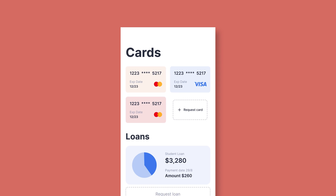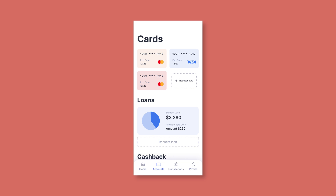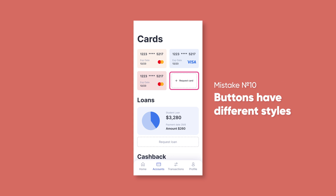The next mistake is also a consistency mistake. The button for requesting a card and the button for requesting a loan have different styles. Any controls that have similar functionality should have a similar style too. Design should follow this rule to make the behavior of elements more predictable and help users learn quicker and avoid confusion.